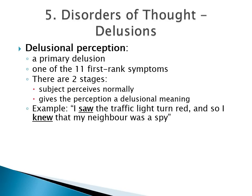A delusional perception is a primary delusion and is one of the 11 first rank symptoms. In delusional perception there are two stages: the first stage is a normal perception, and in the second stage the patient gives that normal perception a delusional meaning. For example, the patient might say 'I saw the traffic light turn red, and so I knew that my neighbour was a spy.' The patient's perception of the traffic light turning red is a normal perception, but when they give it a delusional meaning, it becomes a delusional perception.